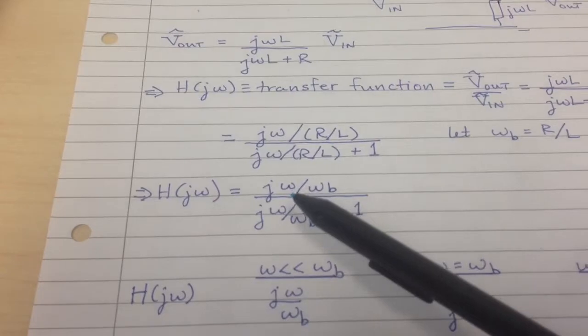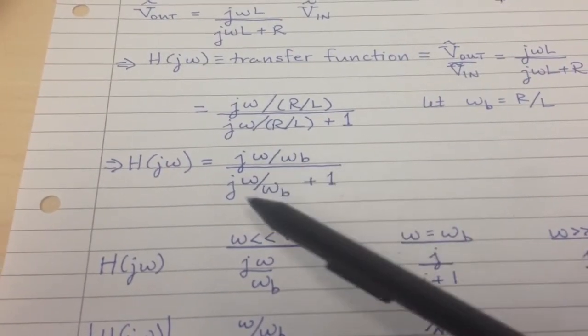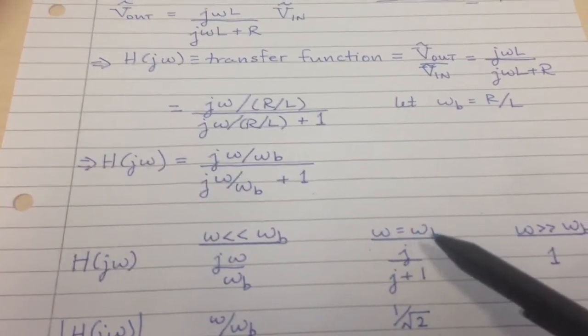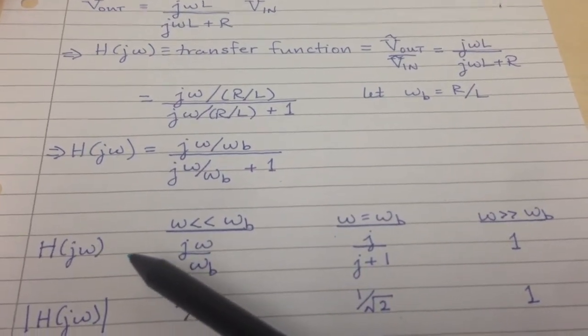This form invites us to divide into three limits: one where omega is much less than omega B, one where omega equals omega B, and one where omega is much larger than omega B. In these limits, we can approximate H.